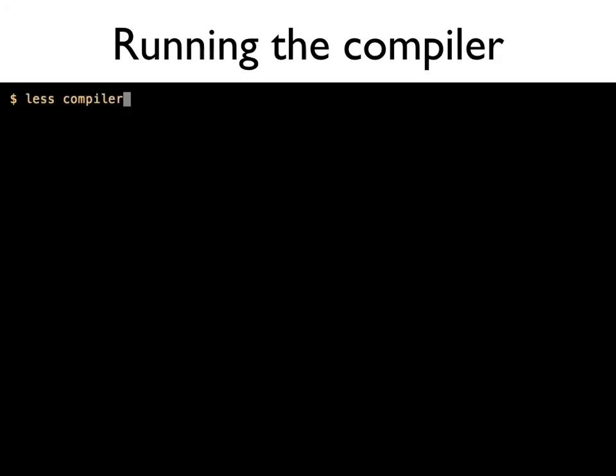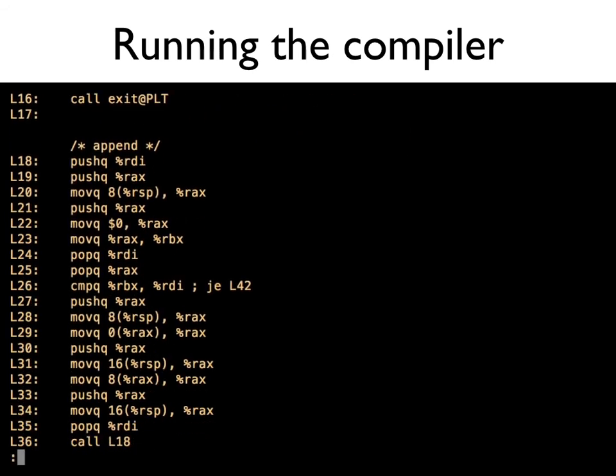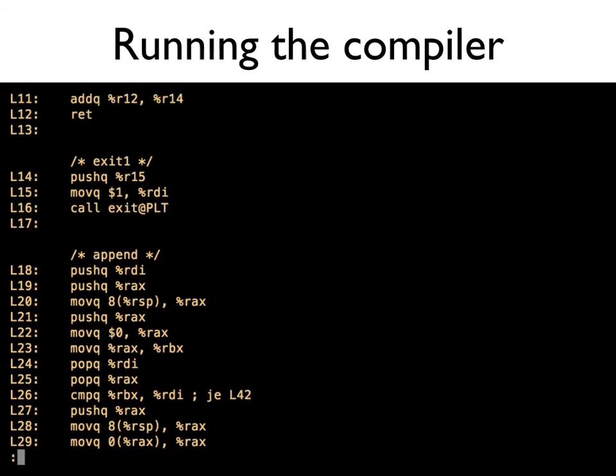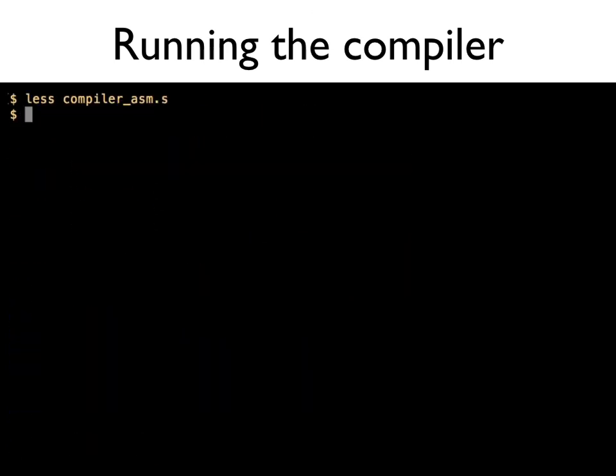So, here's the demo. We start by looking at the compiler as assembly code. Here it is in the file system. It is in GNU assembler syntax. I use GCC to assemble and link the assembly version of the compiler, and the result is a compiler executable.